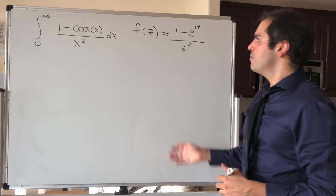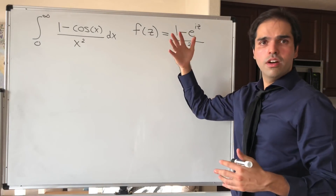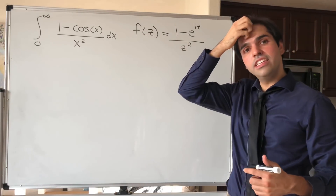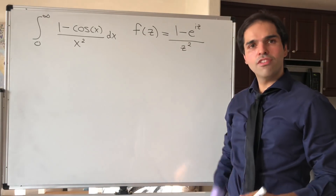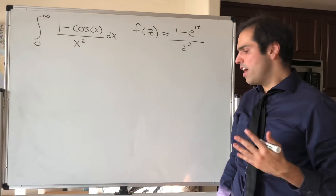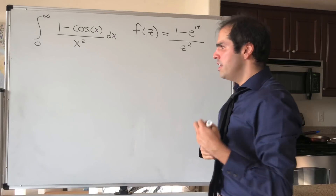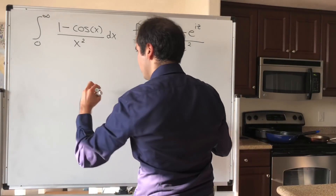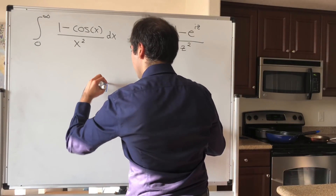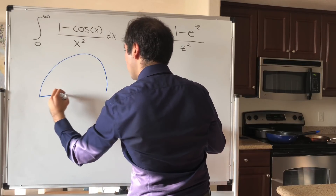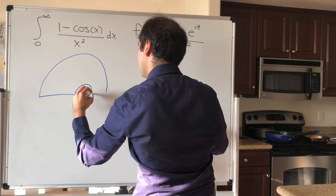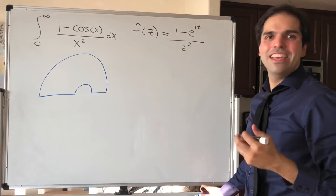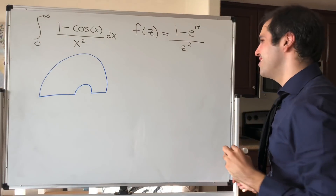In order to calculate this integral, we'll evaluate the integral of f over a very interesting contour, namely the following one. Let me draw this first — this big circle and this small circle. Let me explain what this means.